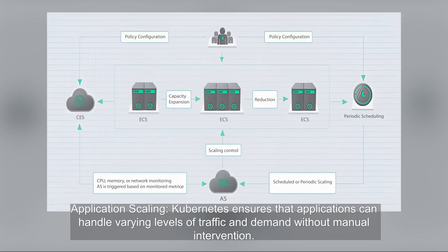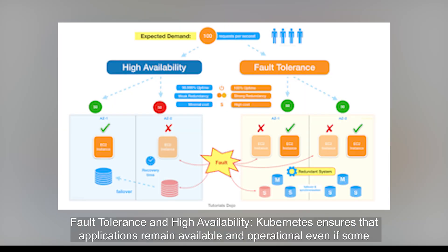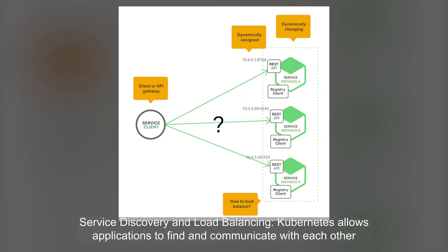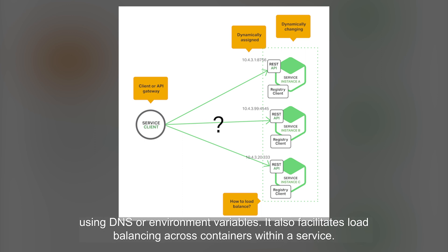Application scaling: Kubernetes ensures that applications can handle varying levels of traffic and demand without manual intervention. Fault tolerance and high availability: Kubernetes ensures that applications remain available and operational even if some containers or nodes fail. Service discovery and load balancing: Kubernetes allows applications to find and communicate with each other using DNS or environment variables, and also facilitates load balancing across containers within a service.